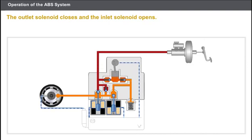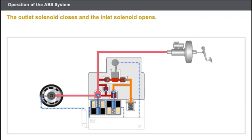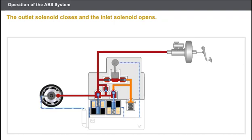Now let's look at the pressure re-increase phase. The outlet solenoid closes and the inlet solenoid opens. The master cylinder is reconnected to the brake caliper, and once again the pressure increases and the wheel returns to its slip point. The faster the regulation frequency, the finer the regulation in braking pressure. Current systems can produce between 30 and 50 pulses per second.